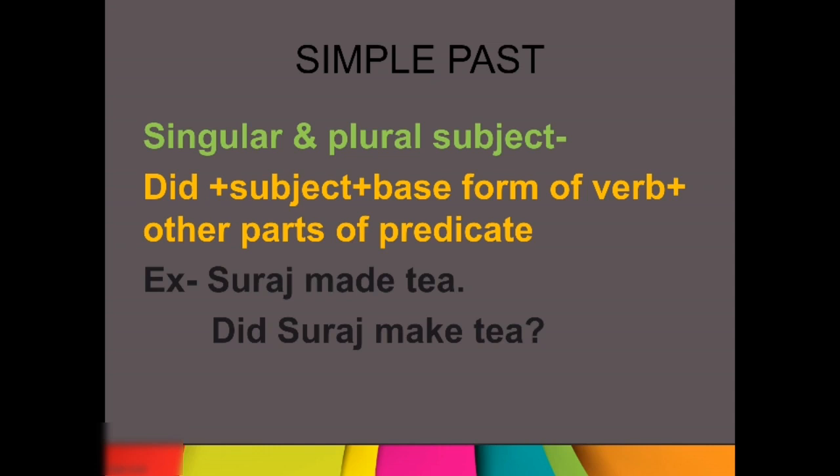Kya kya dekha humne? That in simple present tense, if we are having singular subject, then we will use does plus subject plus verb plus other part of sentence. If we are having plural subject, we will use do. And in simple past tense, we will use did plus subject plus base form of the verb and other parts of the predicate — other parts means jo baaki words bache hain sentence mein. This is how we are going to form questions.